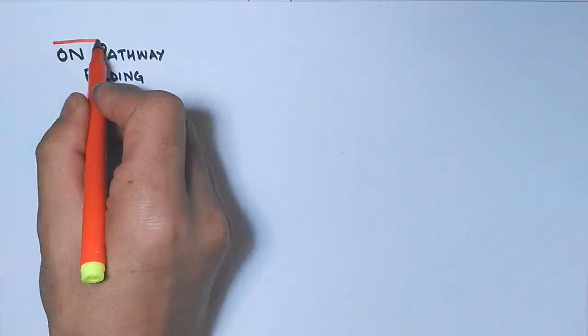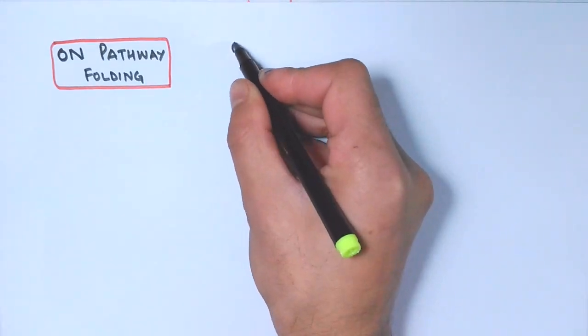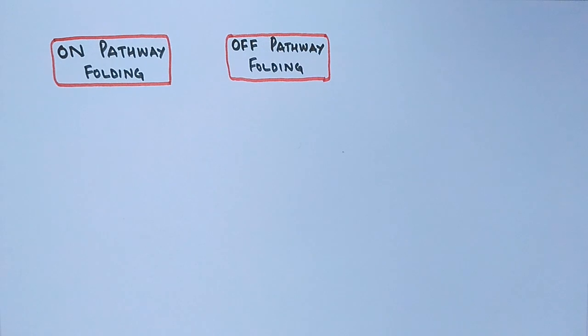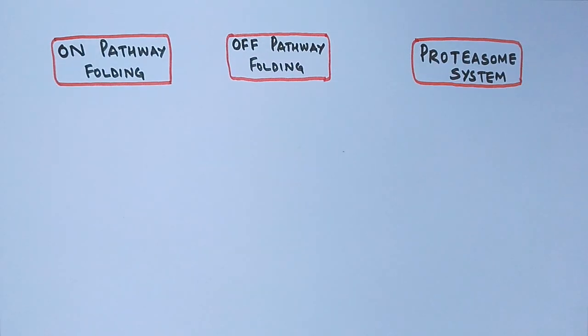Now let's see the action of chaperones in folding process. We see the protein has three ways to go. One is the on pathway folding which is the normal folding process. The second one is the off folding pathway. It's when the protein deviates from the folding process and gets aggregated. And the final way for protein is to go into the proteasome system which we are going to see later on.